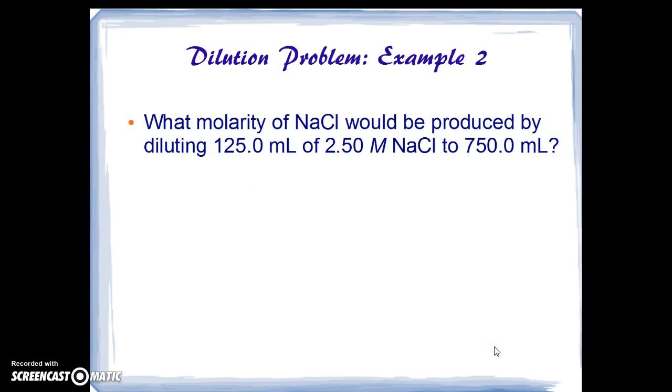Dilution problem 2. What molarity of sodium chloride would be produced by diluting 125 milliliters of 2.5 molar sodium chloride to 750 milliliters? Once more we see that the volume of the concentrated times its molarity is equal to the volume of dilute times its molarity because the millimoles coming out of the concentrated all have to appear in the dilute.